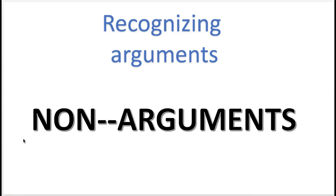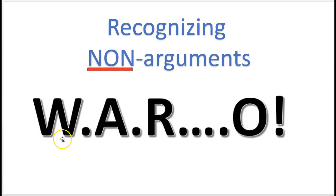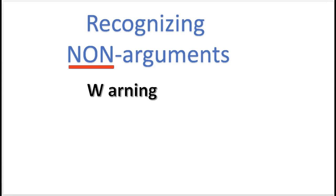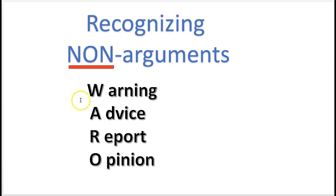A good way to help you determine if someone is presenting an argument is to know what non-arguments are. Here's a key to help you remember: WAR-O. W for warning, A for advice, R for report, or O for opinion — WAR-O. There are other things like illustrations and explanations as well.